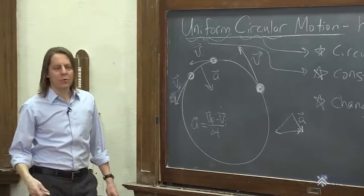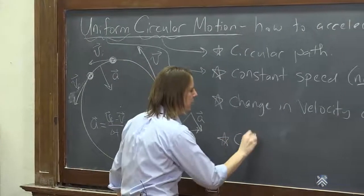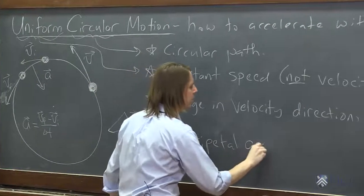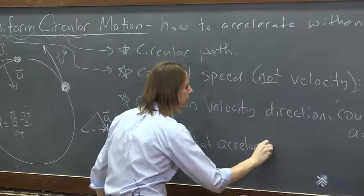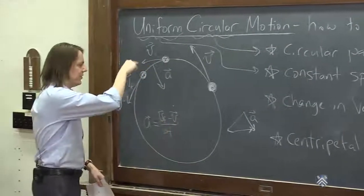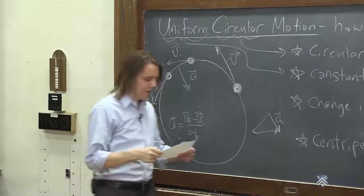And for uniform circular motion, we give it a special name. It's called the centripetal acceleration. So centripetal, I believe, means center seeking. So as this thing moves around, the acceleration is always pointing to the center of the circle. That's why it's called that.